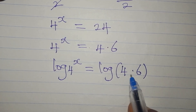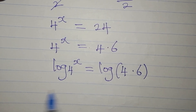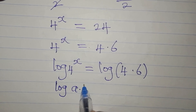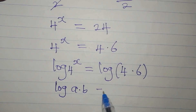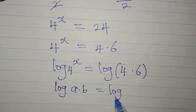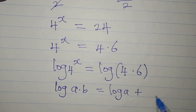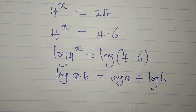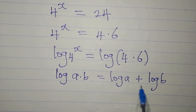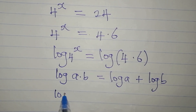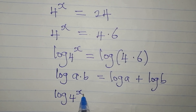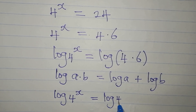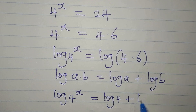From here, this is multiplication, and if you have log(a times b), this is the same thing as log a plus log b. So I will now express this in that form, so that log 4 to the power of x will be equal to log 4 plus log 6.